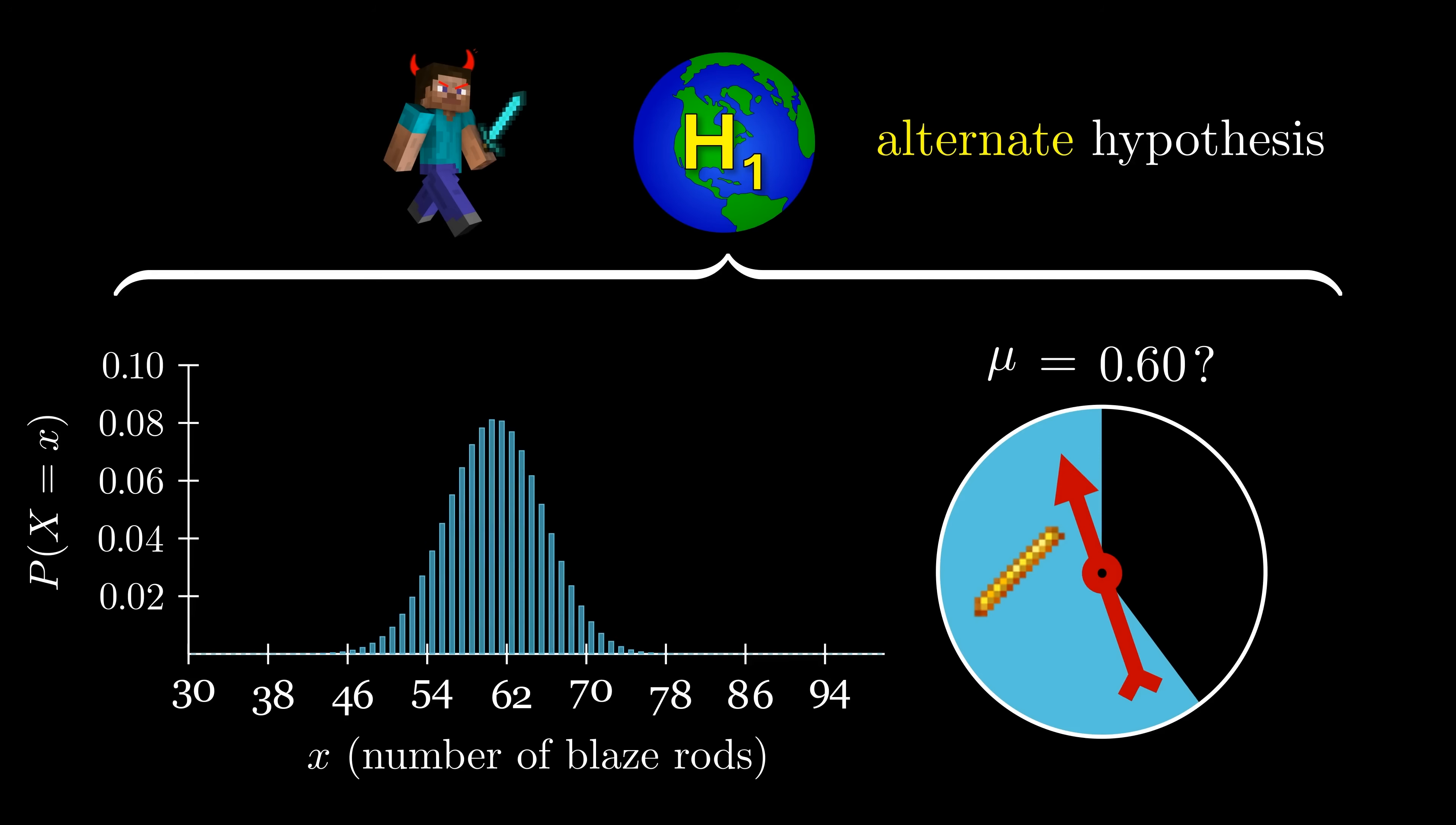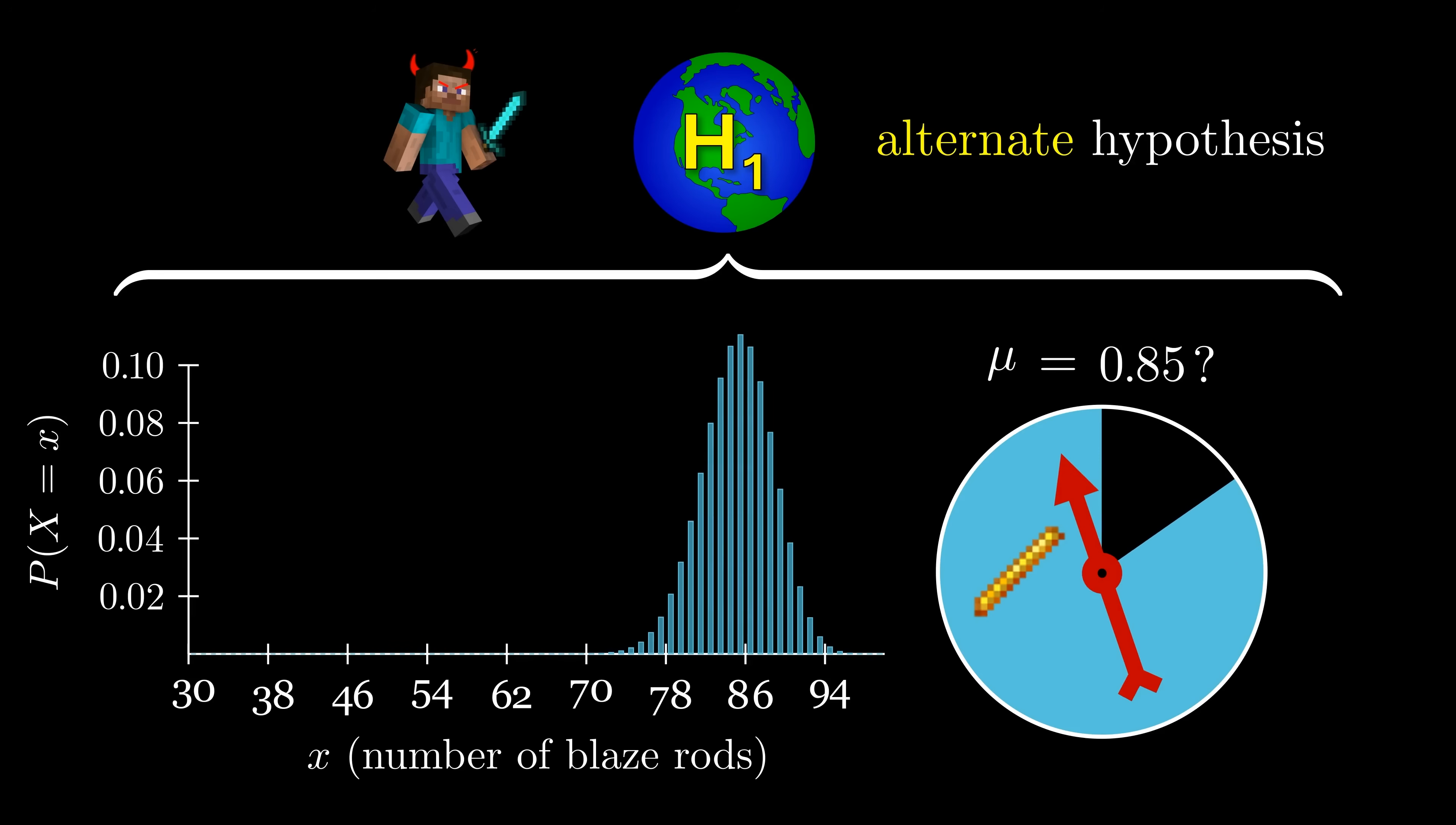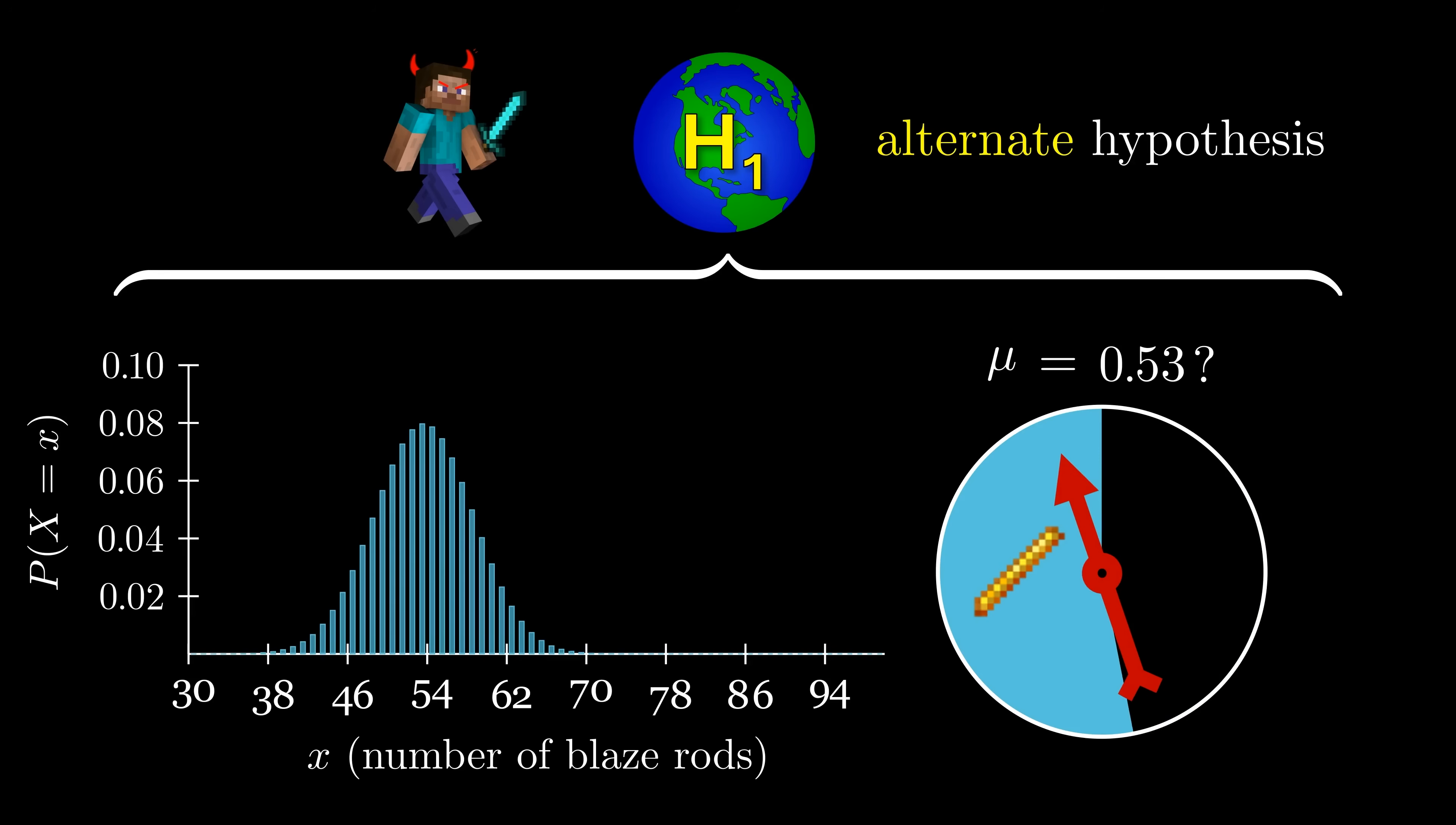But remember that there's no way of knowing exactly how much they increased it by, so we can't calculate probabilities in the alternative world because we don't even know which binomial distribution to use.